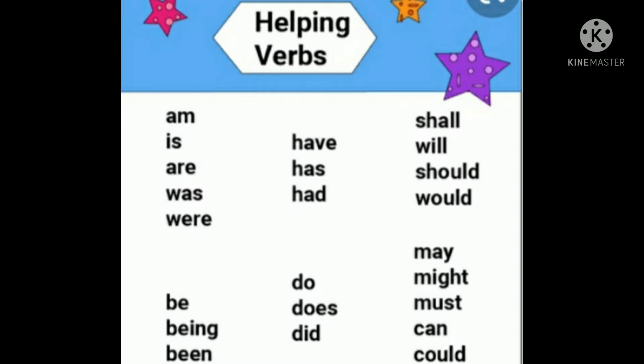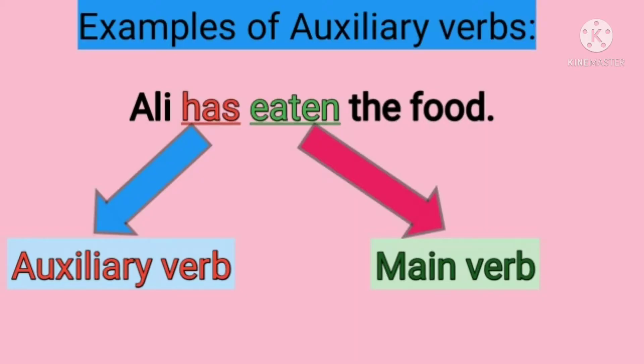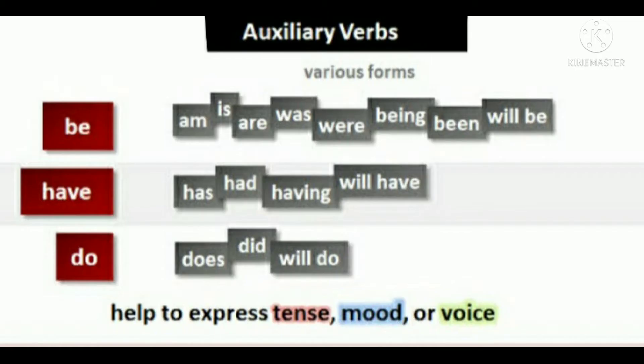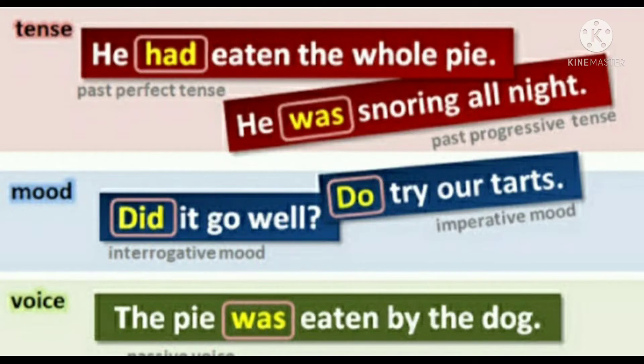Sentence example: 'Ali has eaten food.' In this sentence, 'has' is the auxiliary verb and 'eaten' is the main verb. Now I will tell you how auxiliary verbs express tenses, moods, and voices.